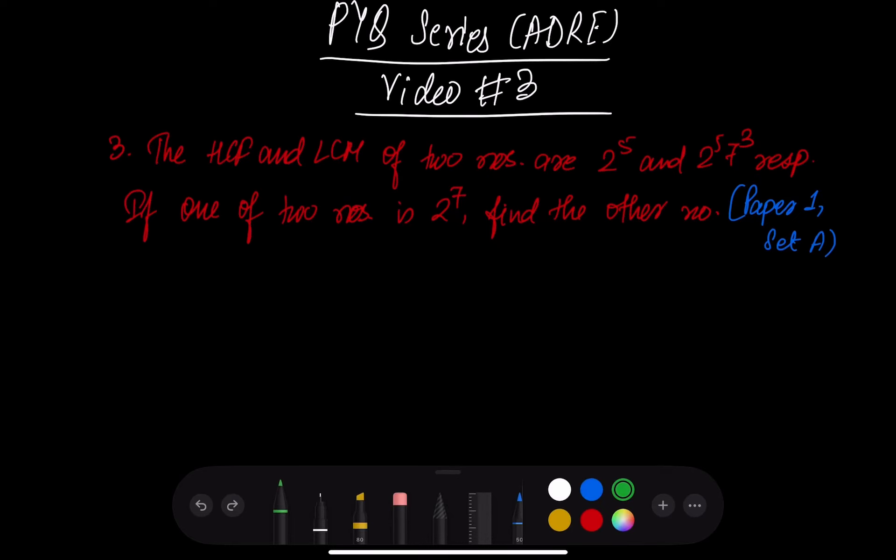It is question number 3, the third video of the series. The HCF and LCM of two numbers are 2 to the power 5 and 2 to the power 5 into 7 to the power 3 respectively. If one of the numbers is 2 to the power 7, then find the other number. It is an HCF-LCM question.